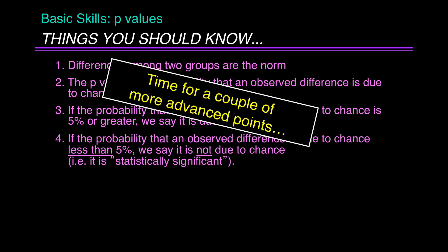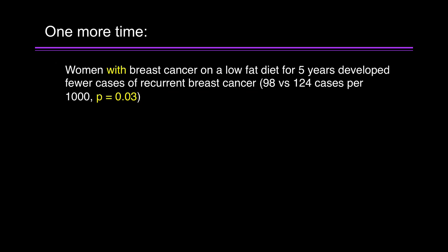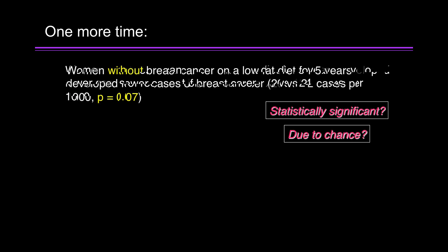Time for a couple of more advanced points. One more time. Women with breast cancer on a low-fat diet for 5 years developed fewer cases of recurrent breast cancer, 98 vs. 124 cases per thousand. P equals 0.03. Statistically significant or due to chance? Well, that's easy. It's less than 5%, so it's statistically significant.